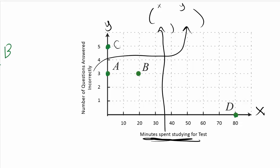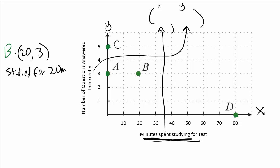We always write X first in the ordered pair, so point B is (20, 3). The 20 represents minutes, and the 3 represents questions wrong. So student B studied for 20 minutes and got three questions wrong on their test. That's how you take an ordered pair and draw meaning from it.